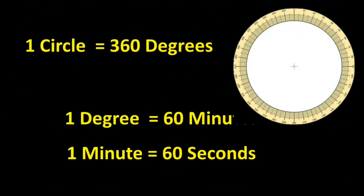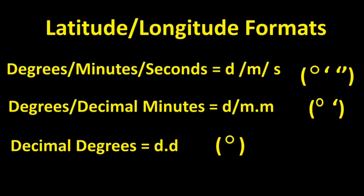Let's review. Lines of latitude are divided into degrees, as with a standard circle. Each degree is subdivided into 60 minutes. Each minute is subdivided into 60 seconds. There are three formats in which longitude and latitude are given: degrees, minutes, seconds; degrees, decimal minutes; and decimal degrees. We previously used decimal degrees to locate Pendleton, Oregon.